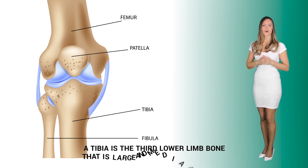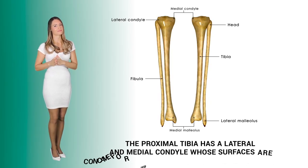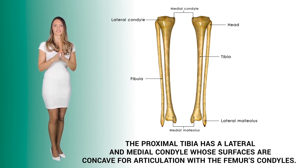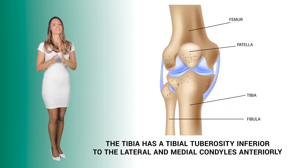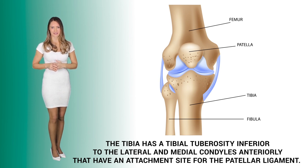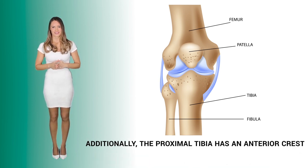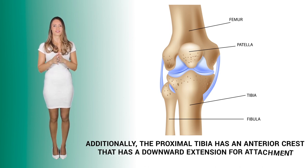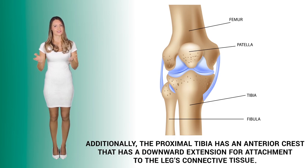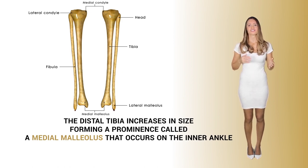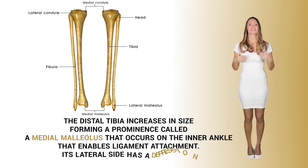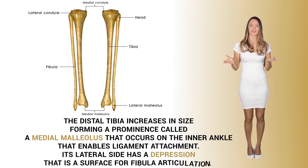The tibia is the third lower limb bone that is large and medially located. The proximal tibia has a lateral and medial condyle whose surfaces are concave for articulation with the femur's condyles. The tibia has a tibial tuberosity inferior to the lateral and medial condyle anteriorly, providing an attachment site for the patellar ligament. Additionally, the proximal tibia has an anterior crest with a downward extension for attachment to the leg's connective tissue. The distal tibia increases in size, forming a prominence called the medial malleolus on the inner ankle that enables ligament attachment.